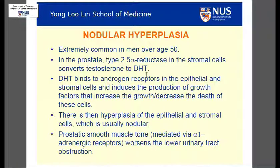The pathogenesis is actually due to dihydrotestosterone or DHT, which stimulates overgrowth in the prostatic epithelium as well as the stroma, hence hyperplasia. However, the actual reason why this happens is not entirely clear.